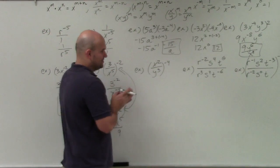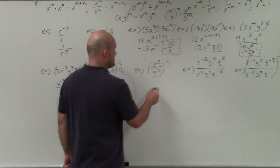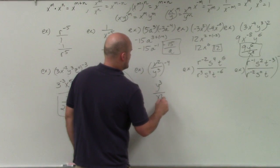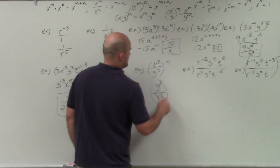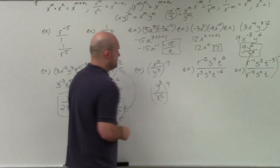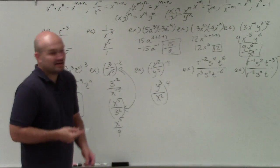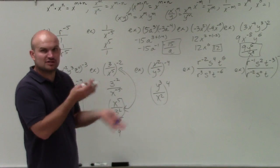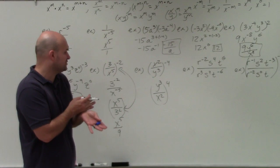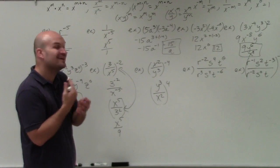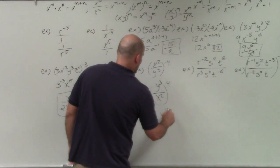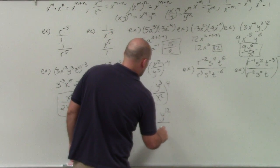For example, let's do the next one. I can just rewrite this as y cubed over x squared, to the 4th power — because distributing that negative simply reciprocates both the numerator and the denominator. Now I can apply the power to quotient rule, which gives y to the 12th over x to the 8th.